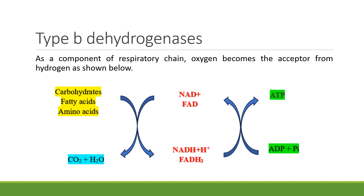For Type B dehydrogenases, the best example is the respiratory chain where oxygen is the hydrogen acceptor. As carbohydrates, fatty acids, or amino acids are oxidized to CO₂ and water, the reducing equivalents (hydrogen atoms) are transferred to NADH + H⁺ and FADH₂. These then transfer to oxygen, and water is evolved, accompanied by the synthesis of ATP.